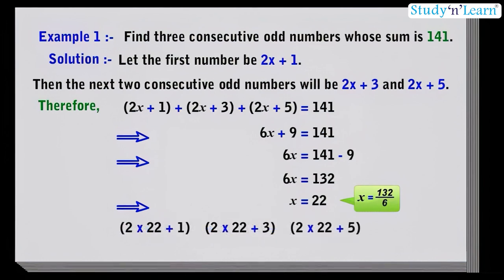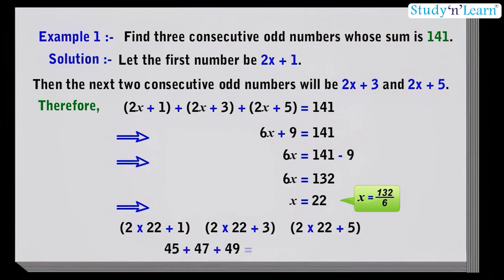These numbers will be 45, 47, and 49. Let us verify the result. We can see that 45 plus 47 plus 49 is equal to 141, which is given in the question.